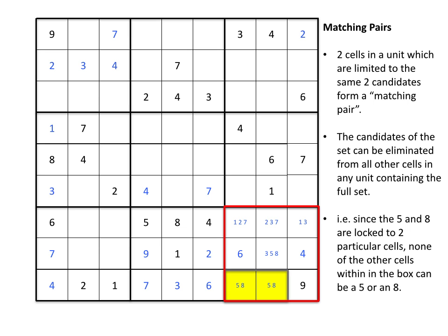So I'll just pencil those two cells in, and that's going to create a wall between the matching pair and the other cells within the unit. So inside the wall you'll have a 5 and an 8, outside the wall you'll have everything else.